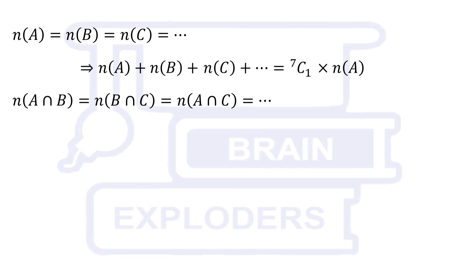One element can be selected from given 7 in 7C1 ways. Two elements from given 7 elements can be selected in 7C2 ways.